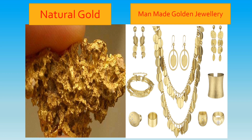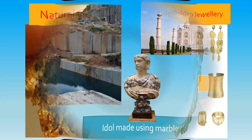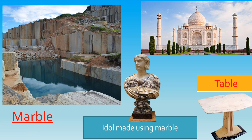Another example of a natural thing is gold, which is also dug from the earth. Jewelry made out of it is man-made. So gold is natural and jewelry is a man-made thing. Another example of a natural thing is marble. Man-made things out of marble are idols, buildings, floors, and many other things.